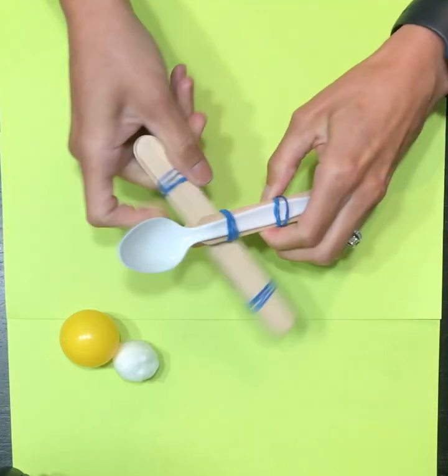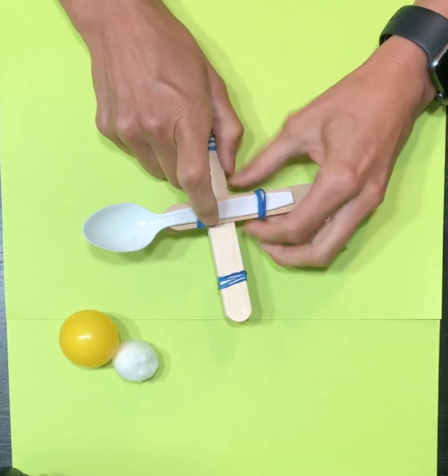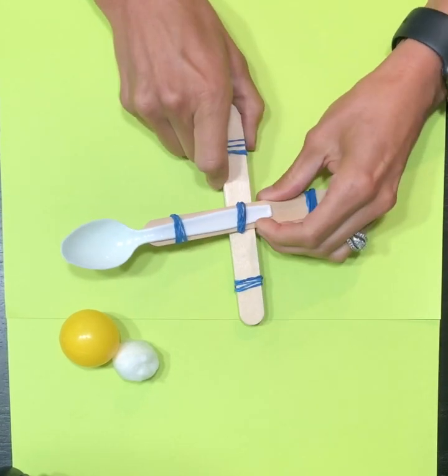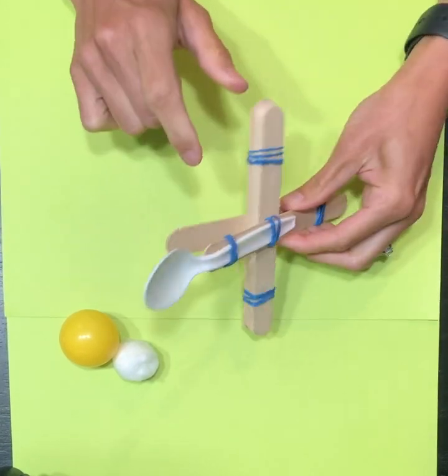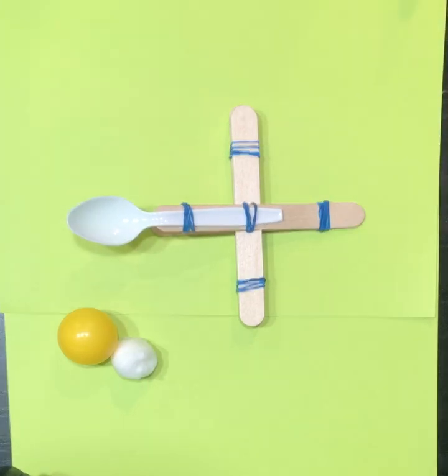So now I'm going to take my other two, my stack of seven and put it in the middle. So essentially my whole catapult is pretty much done.